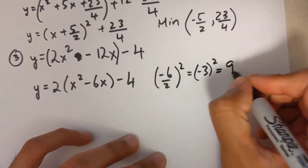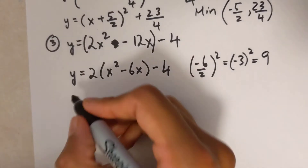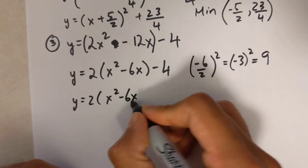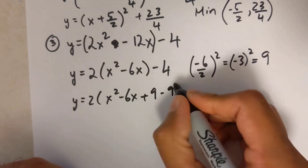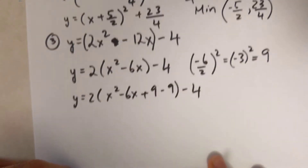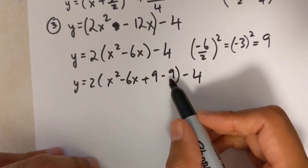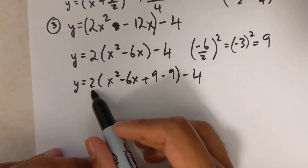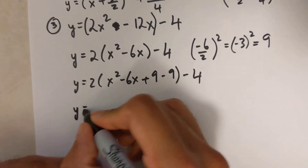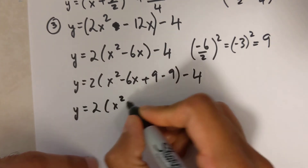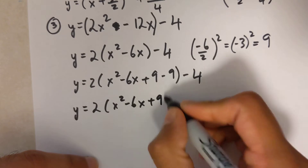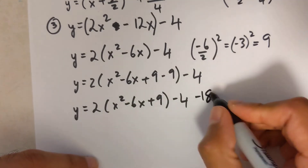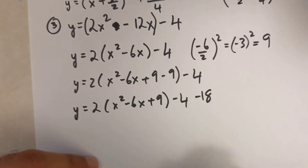So y equals 2 times the quantity x-squared minus 6x plus 9 minus 9, minus 4. When moving the 9 outside the bracket, I multiply it by the 2 out front — that's the key difference here. So it becomes 2 times x-squared minus 6x plus 9, and moving it out gives negative 18.